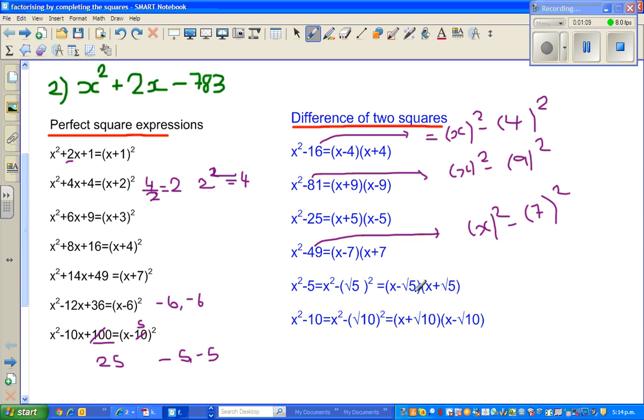Now I didn't discuss these two examples of difference of two squares. When you have an expression like x²-5, now 5 is not a perfect square. There's a way of writing this as difference of two squares.